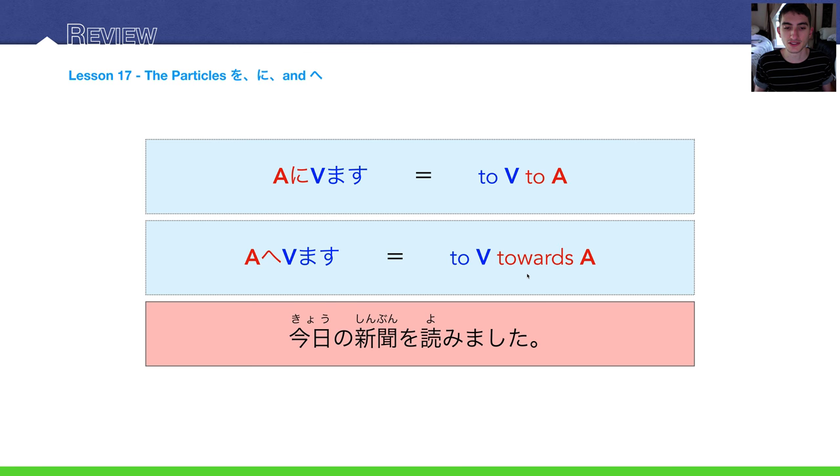The key sentence for lesson 17 was: kyou no shinbun wo yomimashita. Now, remember, this lesson also includes the particle wo. And in this lesson, we talked about direct objects, what direct objects are, and that we mark them with wo. So with the verb yomimasu, yomimashita, to read, you mark the thing being read, or the direct object, with wo. Kyou no shinbun newspaper wo yomimashita. I read today's newspaper.